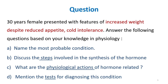A 30-year-old female presents with features of increased weight despite reduced appetite, and cold intolerance. Answer the following questions based on your knowledge of physiology: name the most probable condition, discuss the steps involved in the synthesis of the hormone, what are the physiological actions, and mention the tests. The main questions are the steps, the actions, and the tests.